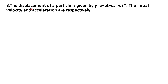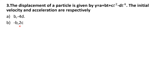Third question. The displacement of a particle is given by Y is equal to A plus BT plus CT² minus DT⁴. The initial velocity and acceleration are respectively: options are A) B, minus 4D; option B) minus B, 2C; option C) B, 2C; option D) 2C, minus 4D. Here the displacement of particle is given in the form of the equation Y equals A plus BT plus CT² minus DT⁴.